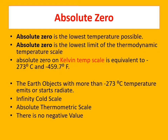Absolute zero is the lowest possible temperature and the lowest limit of the thermodynamic temperature scale. The unit of absolute scale is normally measured in Kelvin (K). Absolute zero is the infinitely cold scale, and if converted to centigrade, it is equivalent to minus 273 degrees centigrade. Earth objects with a temperature greater than absolute zero start to emit and re-radiate, making absolute zero very relevant in EMR radiation and remote sensing.